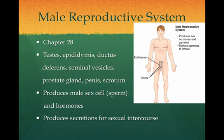The male reproductive system includes the testes, the epididymis, the ductus deferens, seminal vesicles, prostate gland, penis, and scrotum. The male reproductive system produces the male sex cells called sperm, hormones, and secretions used in sexual intercourse.